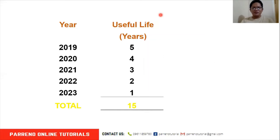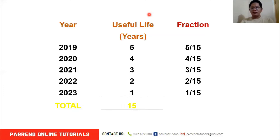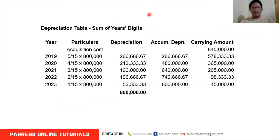The method is called sum of the years digit because the sum of the useful life is the denominator, and the remaining useful life is the numerator when we allocate the cost of the asset. So we create a fraction — the remaining useful life is the numerator and the sum is the denominator. Our fractions are 5/15, 4/15, 3/15, 2/15, and 1/15 respectively. In 2019, we will be using 5 over 15 times the depreciable cost.